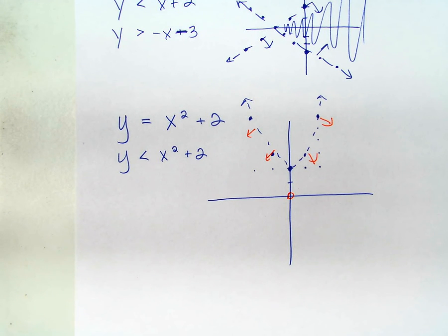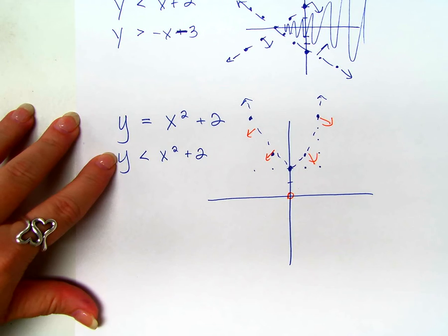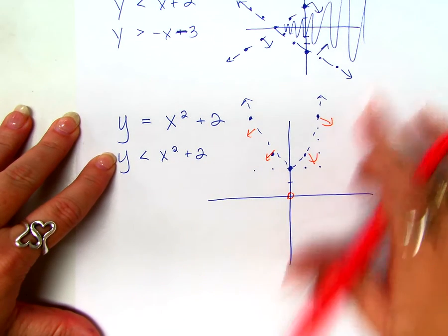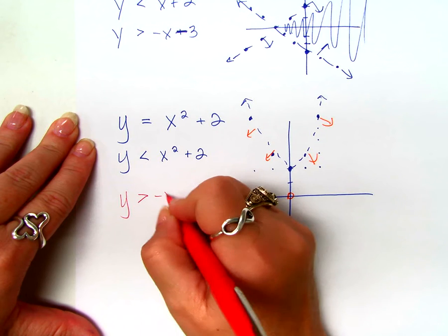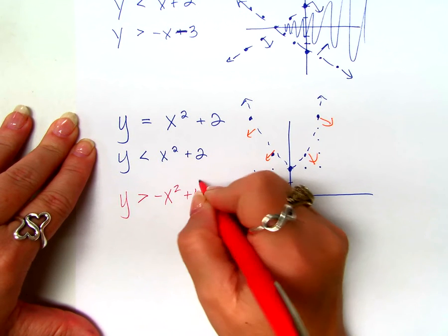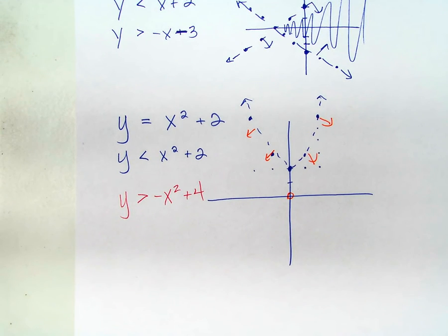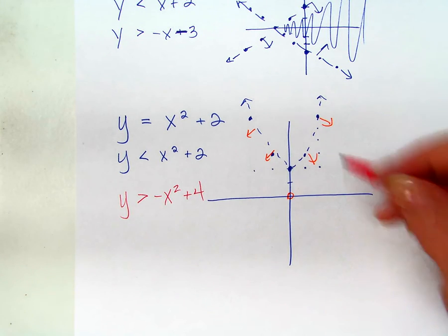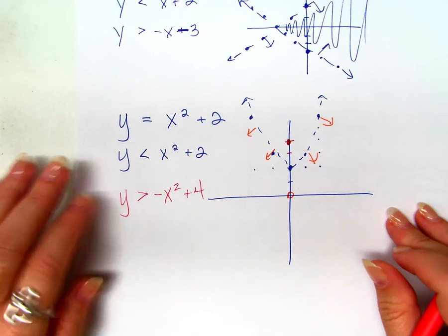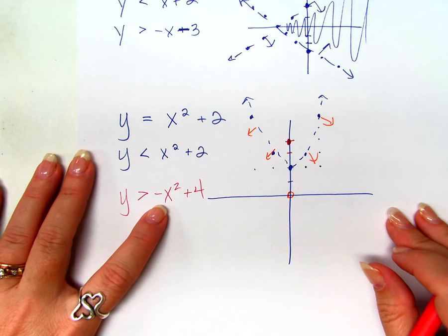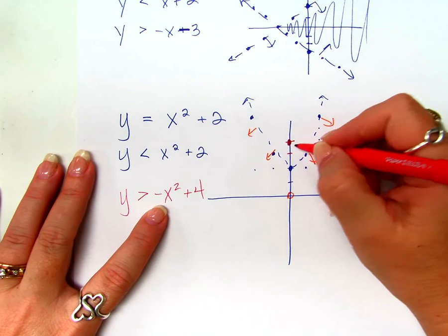But, what happens if I also have another one? If all I have is one inequality, I'm done. I can actually color all this stuff right out here. But, what if I also have that? Let's graph it. 1, 2, 3, 4. Is that parent function shape? Yeah, but it's going down.